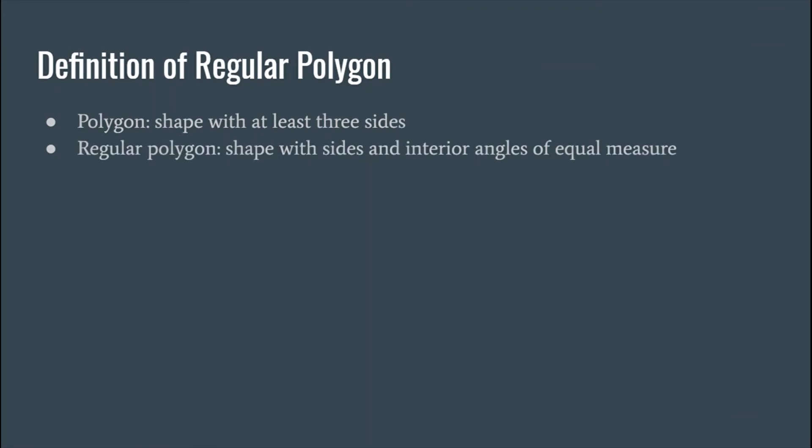A polygon is a shape with at least three sides, so three sides or more. Poly just means many, then gon is shape, so many-sided shape. A regular polygon is defined as a shape with sides that are the same measure and interior angles that are the same measure as well.